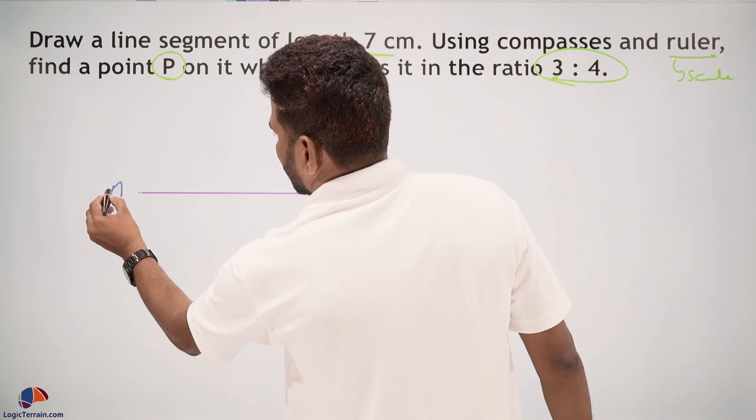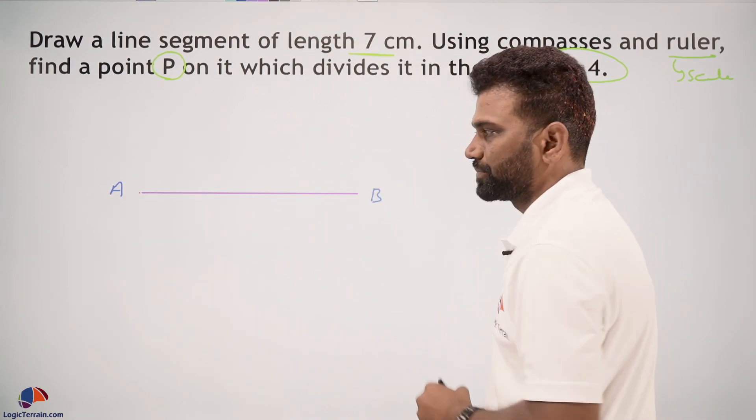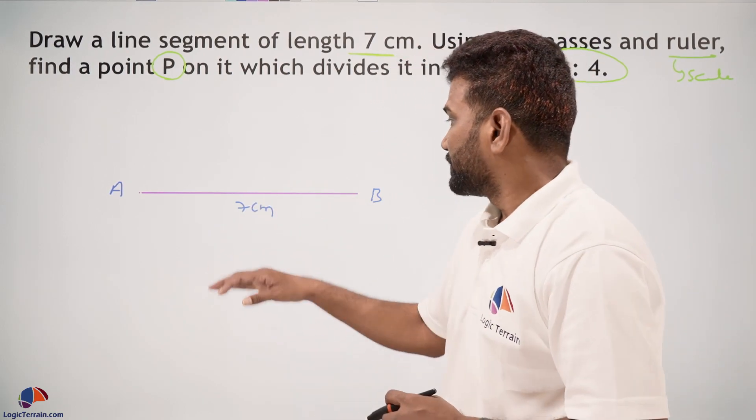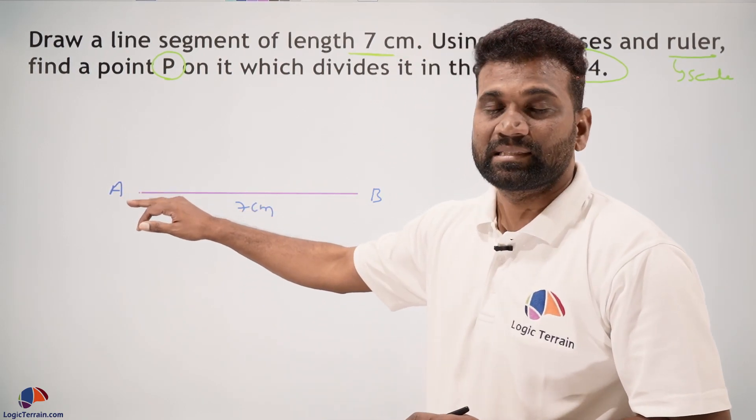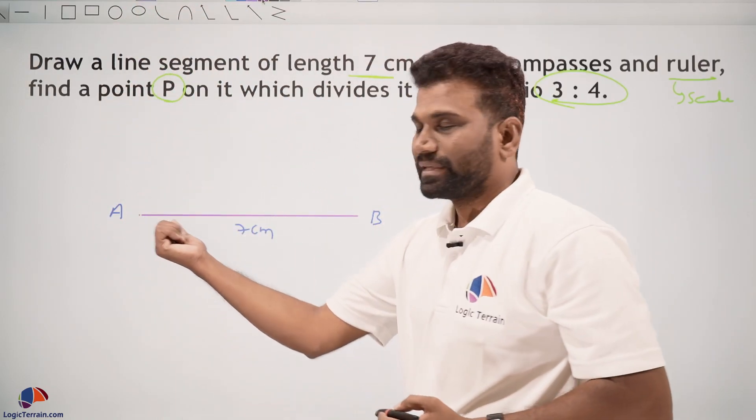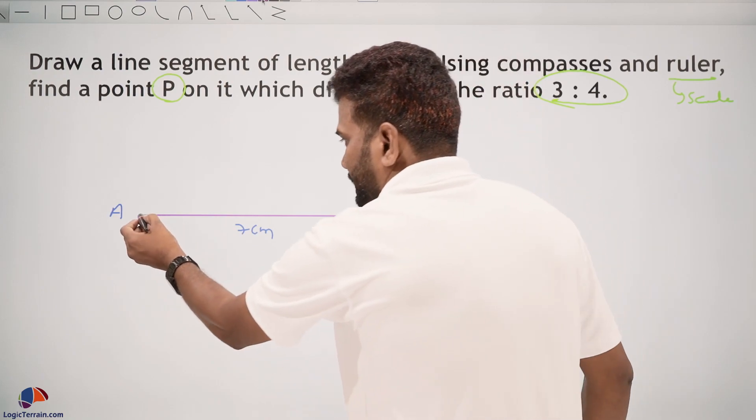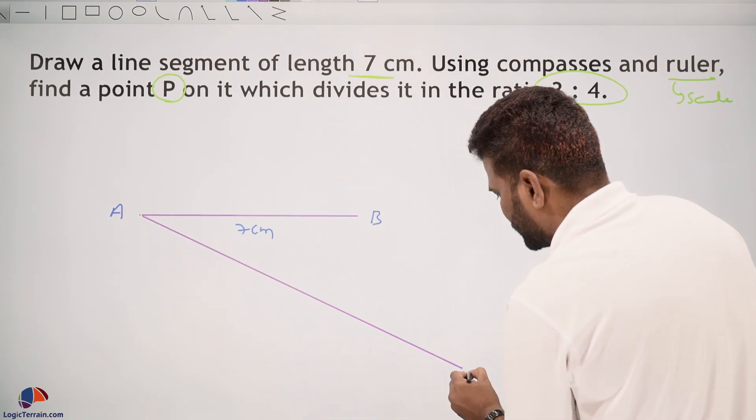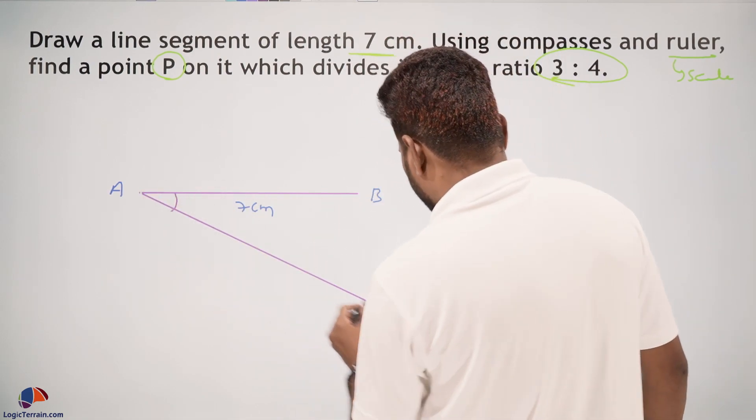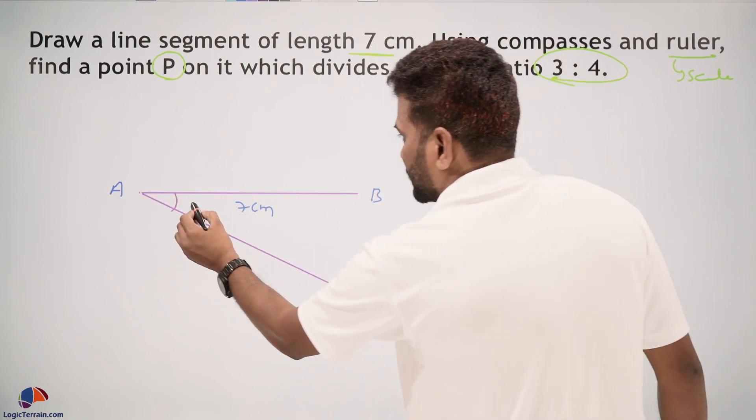Draw AB which is 7 centimeters. From point A, draw an acute angle. An acute angle means you can draw it with some small angle. Name this angle BAX. This is an acute angle.